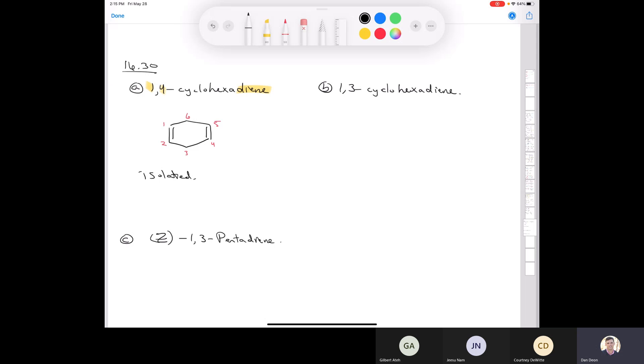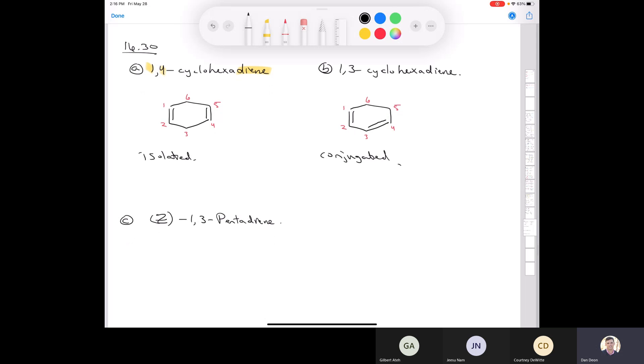Whereas if we have 1,3-cyclohexadiene, we do the same thing. I could even copy this over, so if I just copy this and paste it over here. All I need to do is delete one of the pi bonds, and then the other pi bond is going to be at the third carbon, and you can see that this is conjugated, and this is locked in the S-cis conformation, and so 1,3-cyclohexadiene is a diene that we saw several times in Diels-Alder reactions in this chapter.